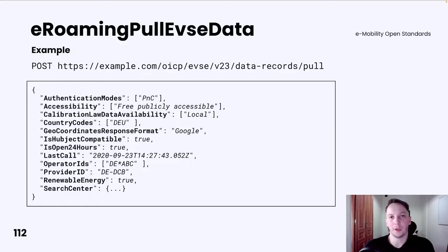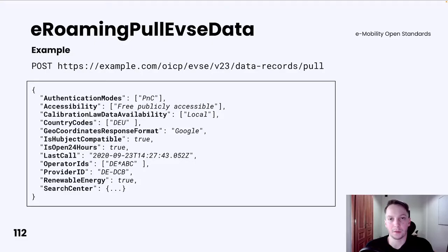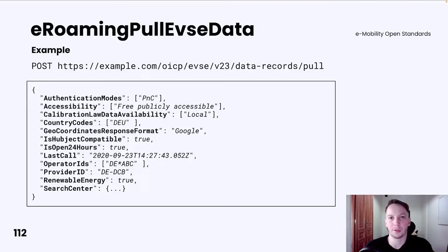The request for eRoaming pull EVSE data includes many types of filtering parameters. The only mandatory attributes are ProviderID and GeoCoordinatesResponse format. Most filterings are very useful — for example, you can filter by authentication modes, accessibility, renewable energy, and a few more. But probably the most useful one is filtering by search center, which can be provided to return EVSEs within a specific radius.